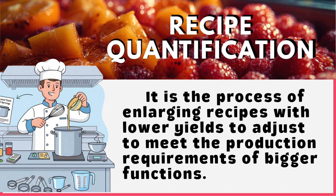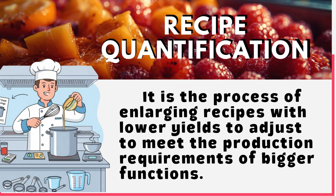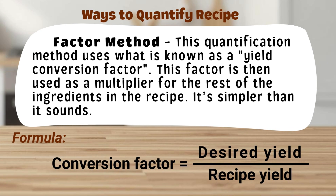Recipe quantification is indeed the vital process used in professional kitchens to enlarge recipes — those with lower yields — so they meet the high production requirements of large functions, events, or commercial operations. The factor method is a quantification method that uses what is known as a yield conversion factor. This factor is then used as a multiplier for the rest of the ingredients in the recipe. It's simpler than it sounds.